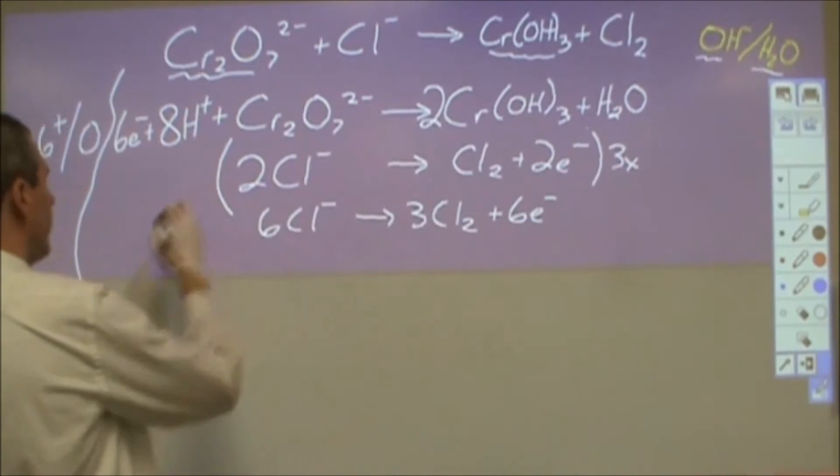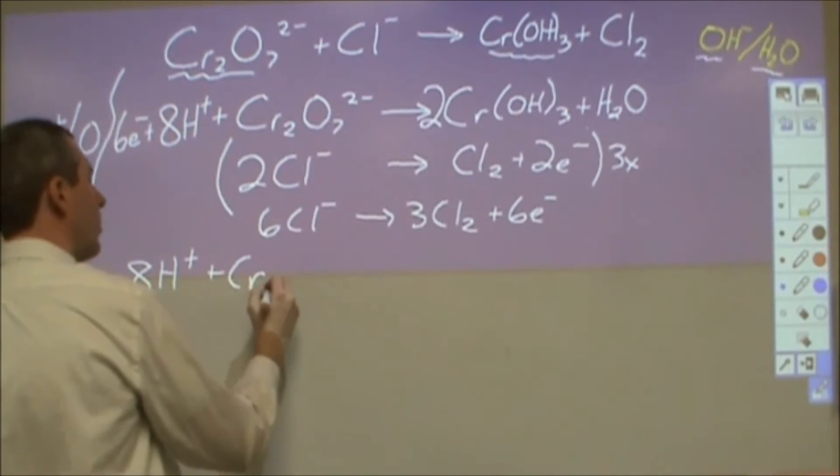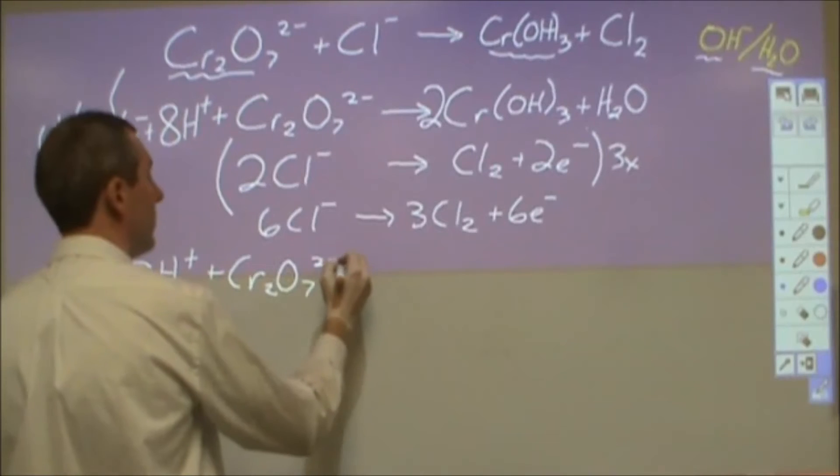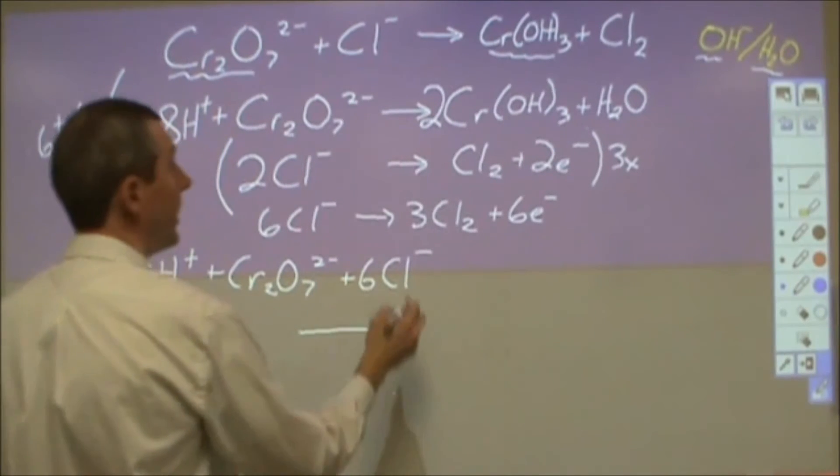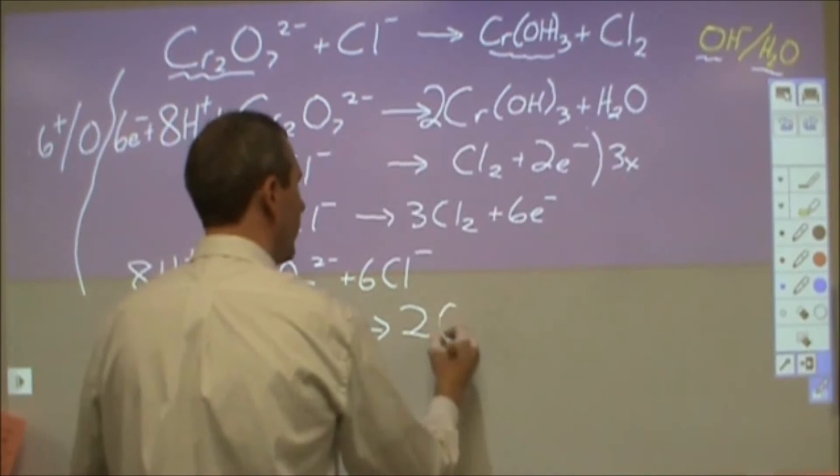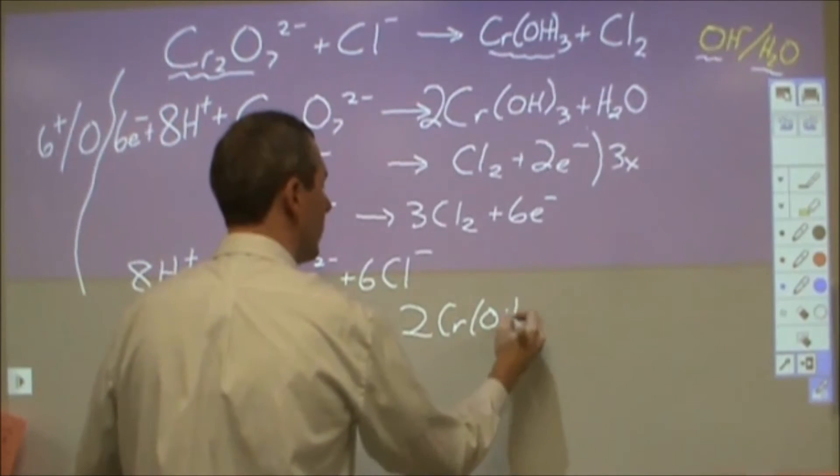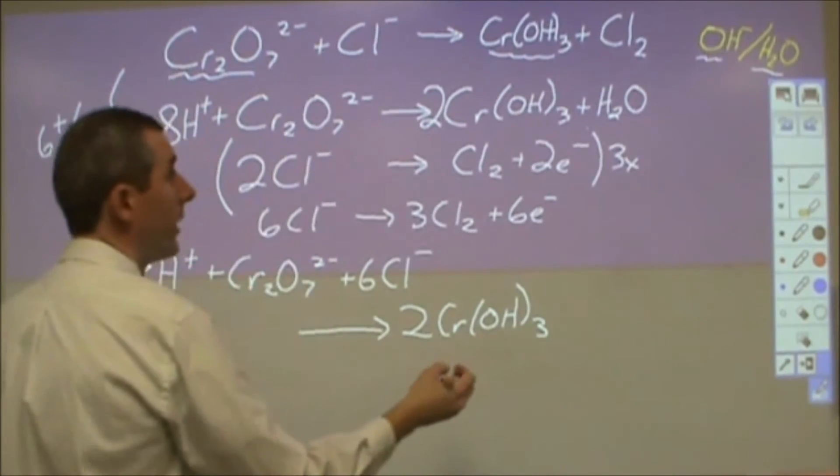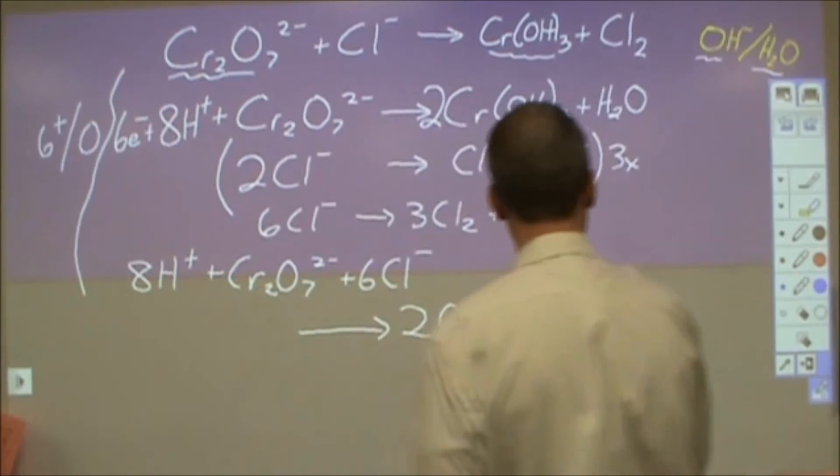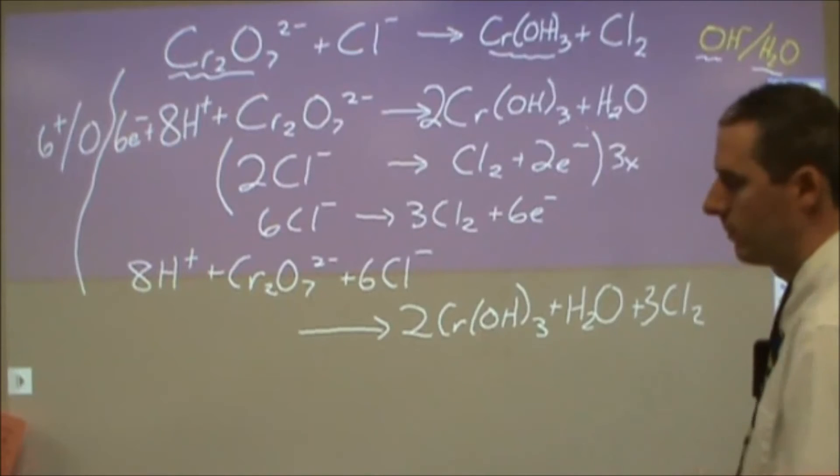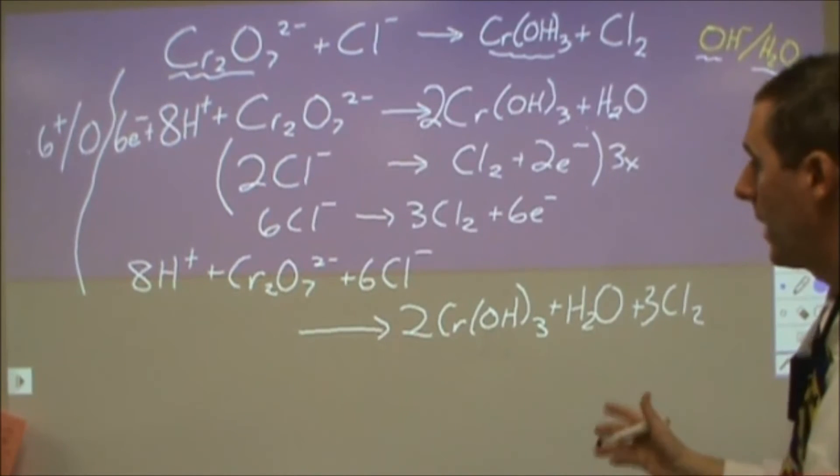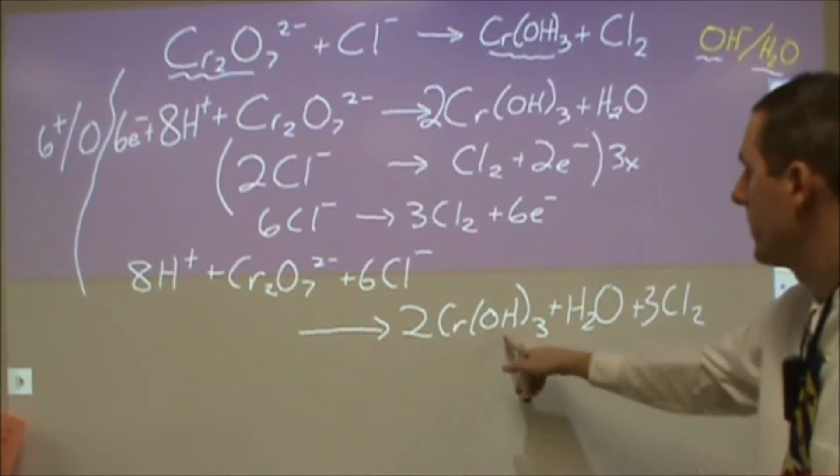So now I'm going to go through and add everything together. The six electrons will cancel and I'll end up with eight H pluses, one dichromate ion, six chlorides, and then I'll end up with two of the chromium hydroxides, and then I'll end up with a water and three chlorine molecules. Now at that point I'm done if I'm in acidic but obviously I'm not.